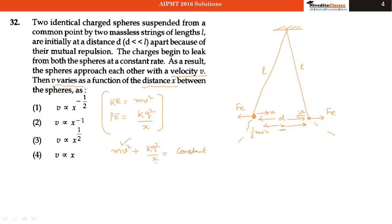Or we can say that V squared will be proportional to 1 by X, or we can say that V will be proportional to 1 by square root of X. That means